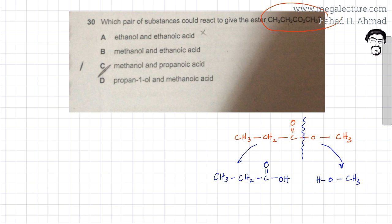So esters are formed when carboxylic acids react with alcohols. The carboxylic acid loses its OH, the alcohol ends up losing its H, and a water molecule is produced and the two molecules join together.